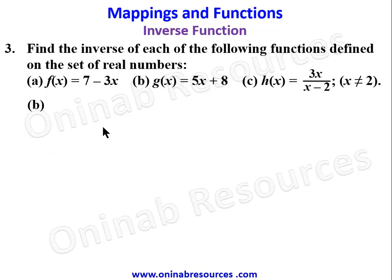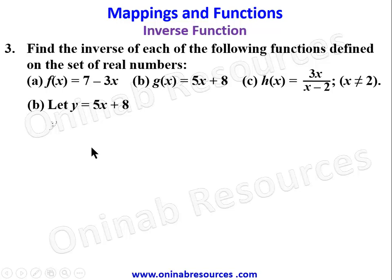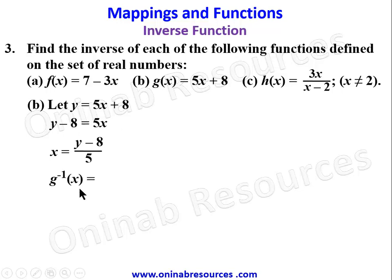For problem 3(b), we let y = 5x + 8. Making x the subject: bring +8 to the left hand side, so y - 8 = 5x. Dividing both sides by 5: x = (y - 8)/5. Therefore g⁻¹(x) = (x - 8)/5. That is the end of the solution to problem 3(b).